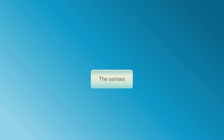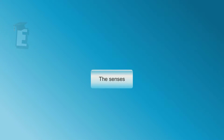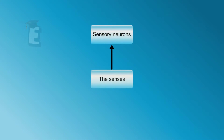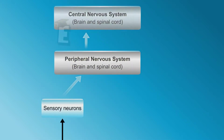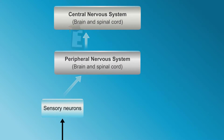Every stimulus produces impulses communicated to the central nervous system. These impulses produce voluntary and involuntary actions. The stimulus is firstly received by sensory neurons and forwarded in the form of impulses through the peripheral nervous system to the central nervous system, where these impulses are interpreted.